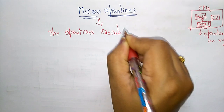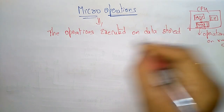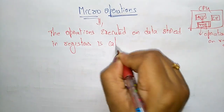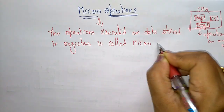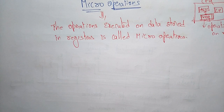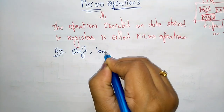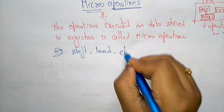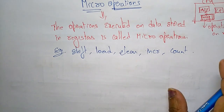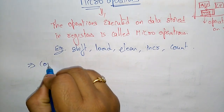The operations executed on data stored in registers are called micro operations. Examples of micro operations are shift, load, clear, increment, and count. These are the different micro operations found in a computer system.